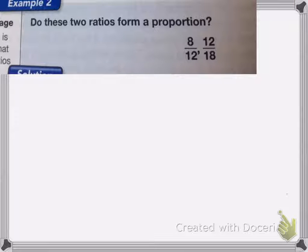So in this one, it asks do these two ratios form a proportion? Remember, proportion means that they are equal to each other. So we have 8 twelfths and 12 eighteenths. Again, I'm going to multiply the bottom by the top.